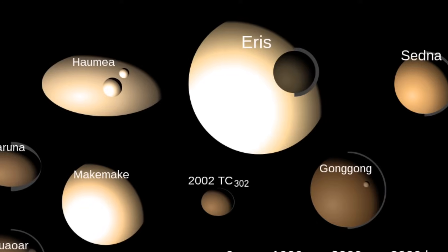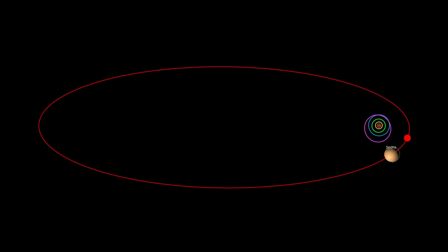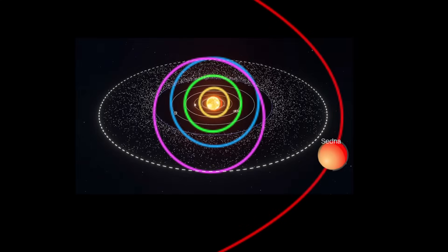Take one example, the trans-Neptunian object named Sedna. Its orbit is extremely elongated with a closest approach to the Sun at about 76 astronomical units, well beyond the Kuiper Belt.